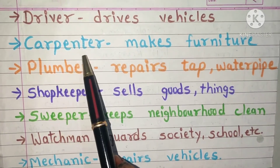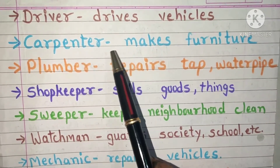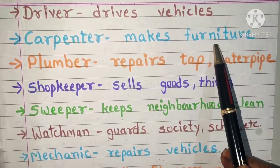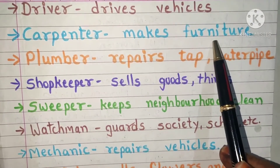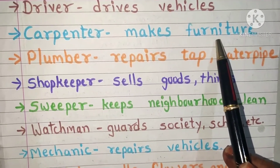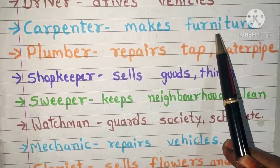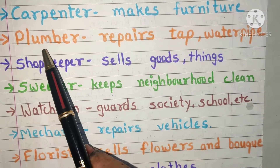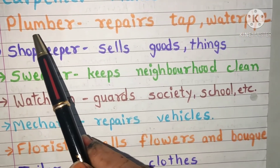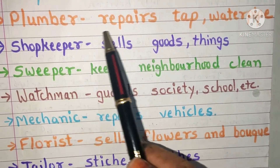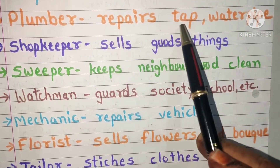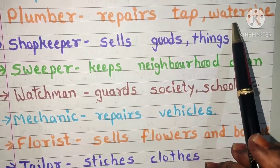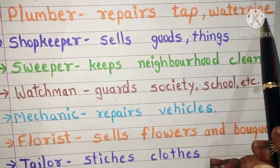Carpenter makes furniture like table, chair, cupboard, etc. Plumber repairs taps, water pipes, etc.